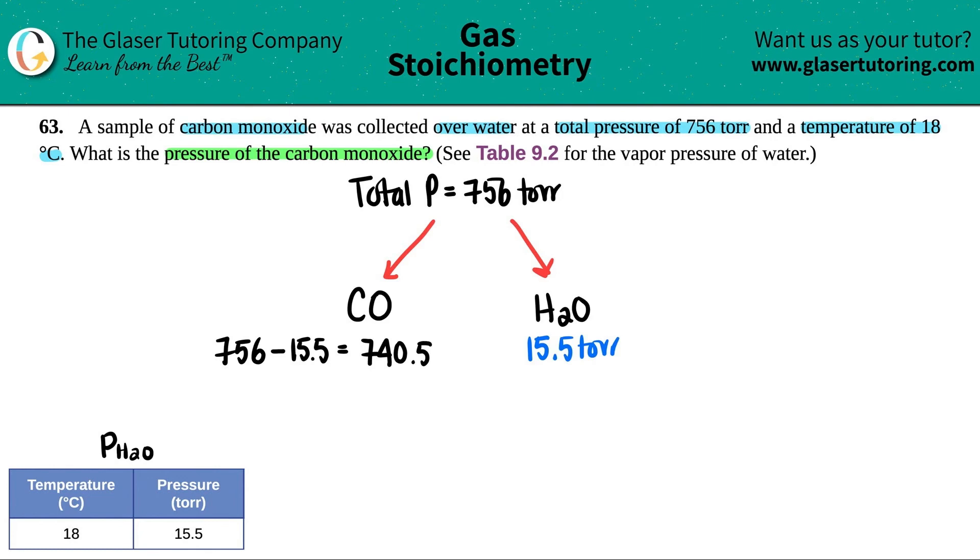740.5 torr - this is the answer for the pressure of carbon monoxide. If you want to care about sig figs, there were no places after the decimal for 756, so technically you'd round this up to 741 torr.